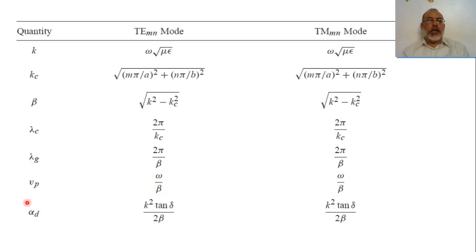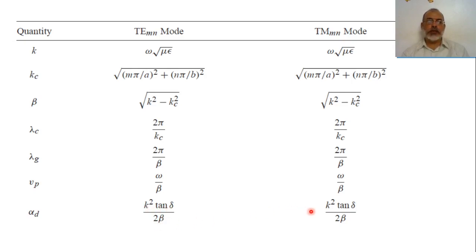The dielectric attenuation coefficient alpha-d for the TE mode is K² · tan(delta) over 2·beta. For transverse magnetic modes it is K² · tan(delta) over 2·beta as well.